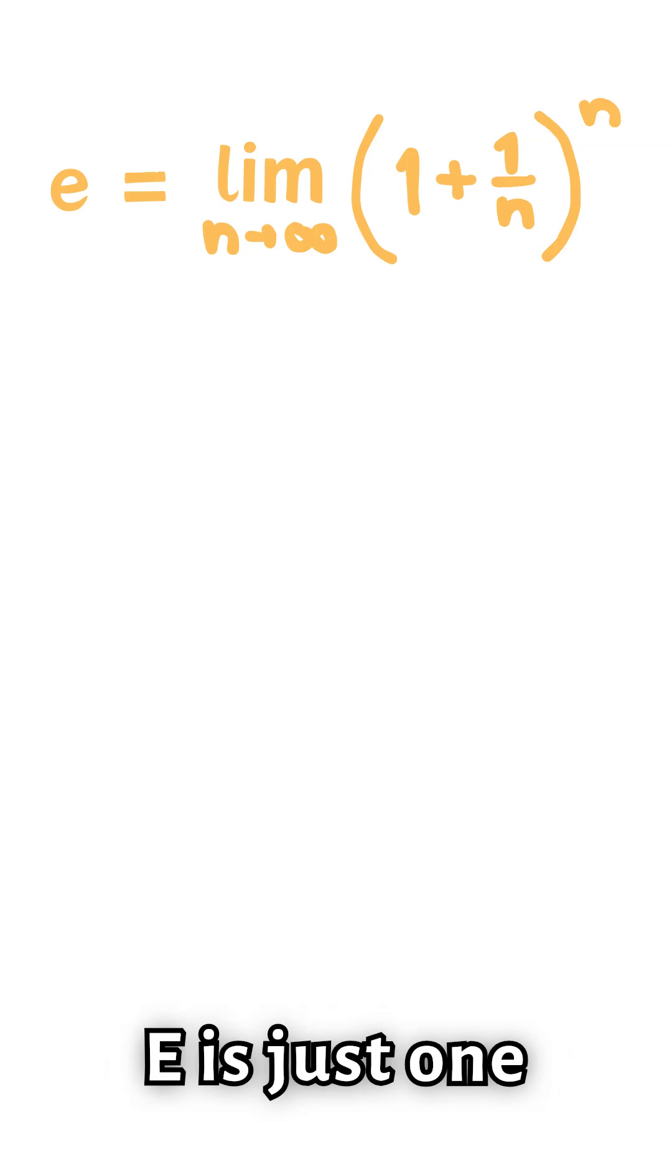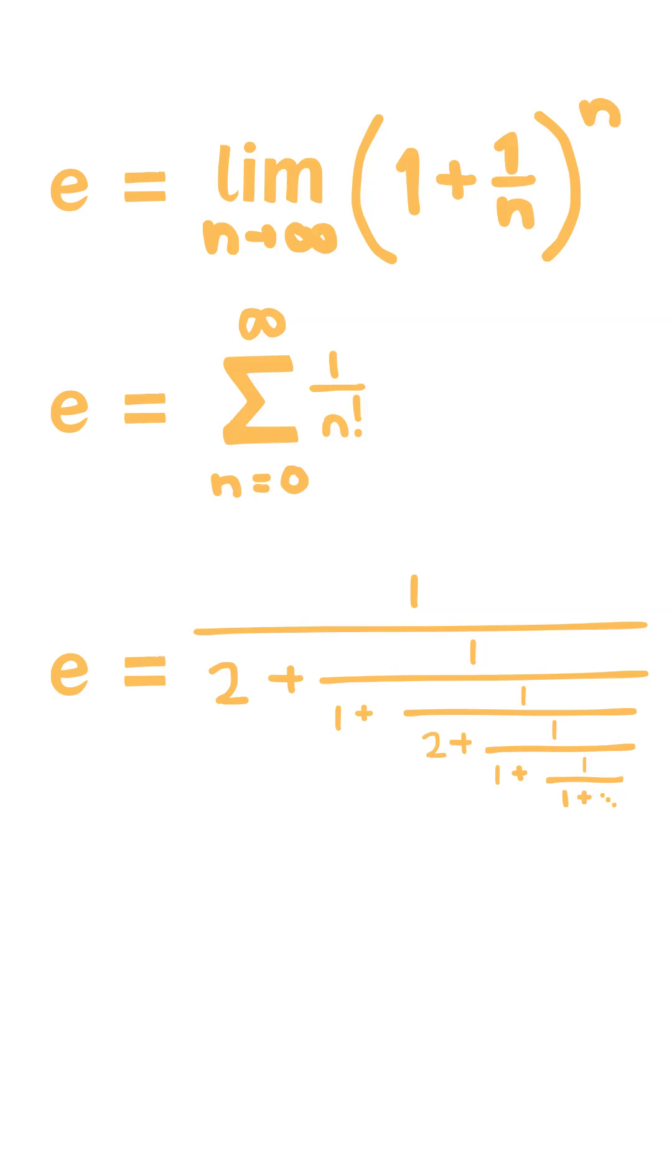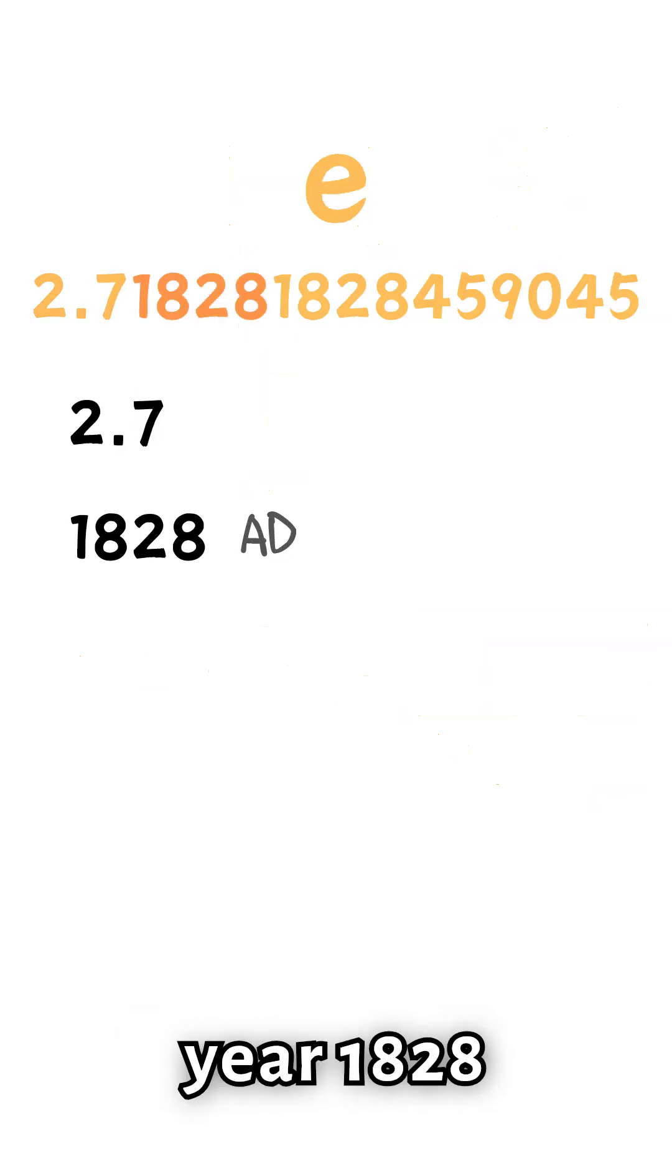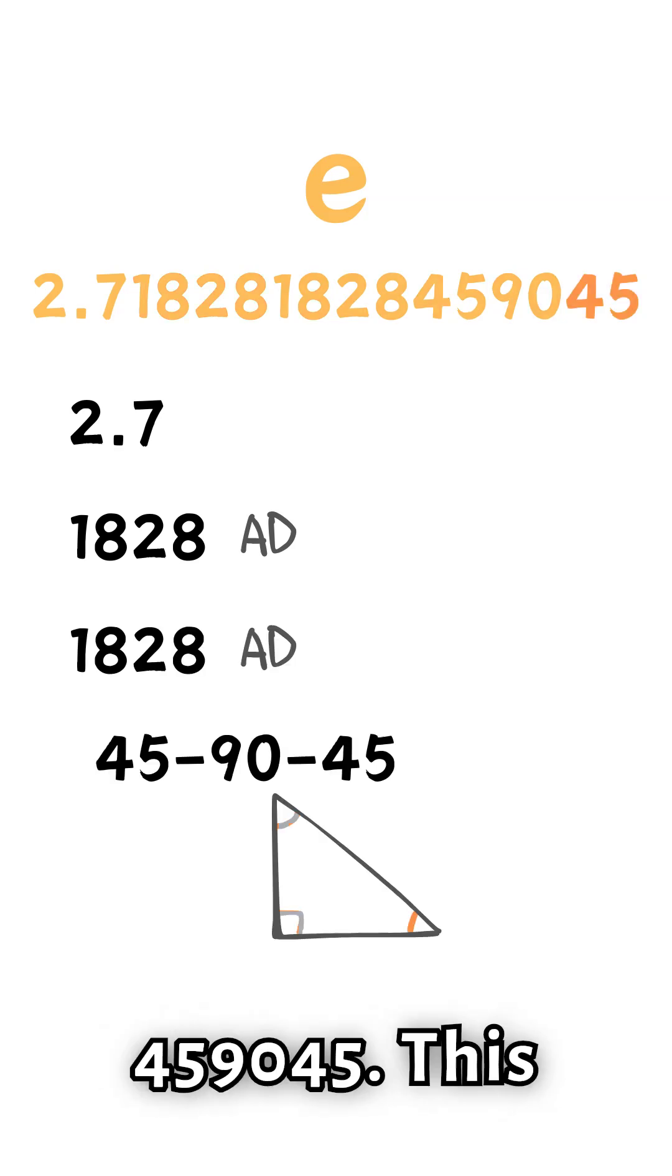The limit definition of e is just one of many ways to express e. Here are a few more ways we could express e. To remember the first 16 digits of e, you start with 2.7, then the year 1828, twice, followed by a right triangle, 45, 90, 45.